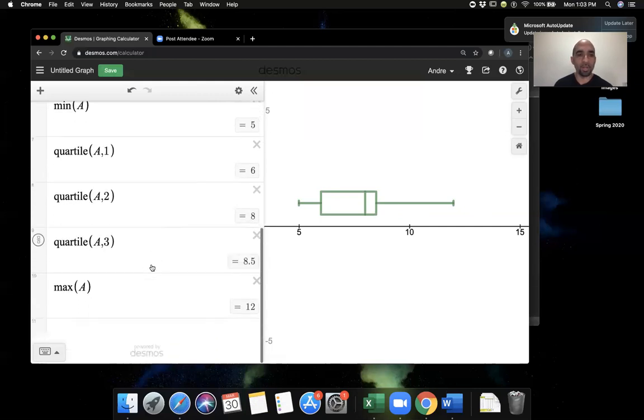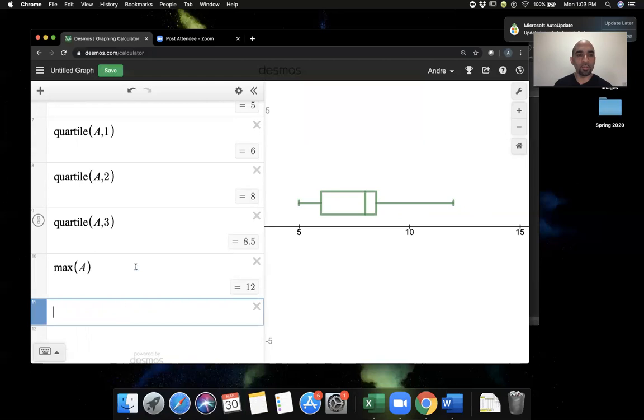This is showing the visualization of the five number summary. The last thing I want to show you in this video is the interquartile range. The interquartile range is the third quartile minus the first quartile. So in this case, it would be 8.5 minus six, and we're getting 2.5. That will be the interquartile range, which is the width of the box. The middle 50% goes from six to 8.5, so the middle 50% has a width of 2.5.